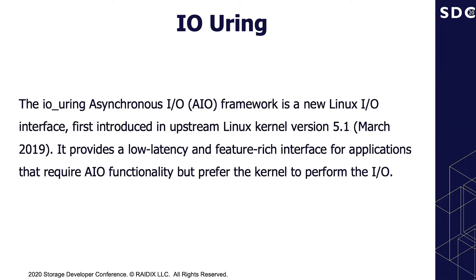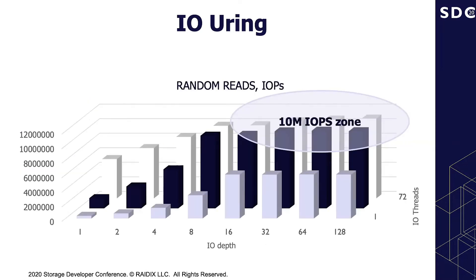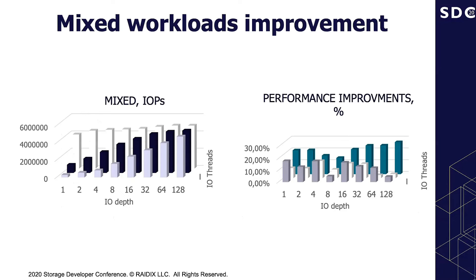io_uring is a new Linux I/O interface. It provides low latency and a feature-rich interface for applications that require asynchronous I/O. Our new record is 10.9 million IOPS — we have a large zone with more than 10 million IOPS results. We did not forget about the mixed workload either. Now we are close to 5 million IOPS and our performance tuning steps give us up to 27% performance improvement.